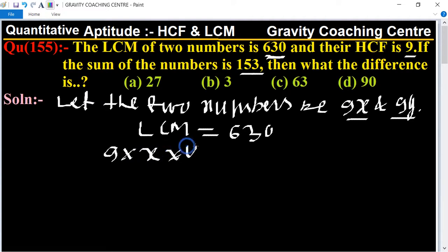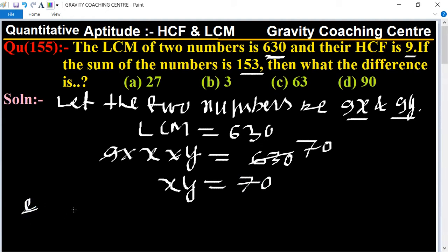y equal to 630. So 630 cancelled by 9 is 70, so here XY equal to 70. And the sum of their numbers means 9x plus 9y is also given equal to 153.